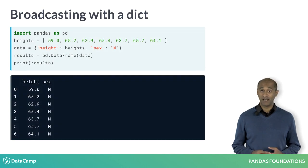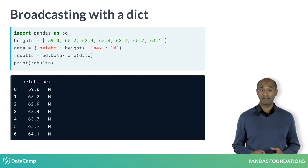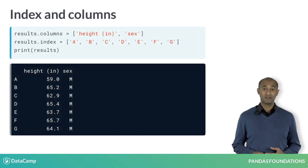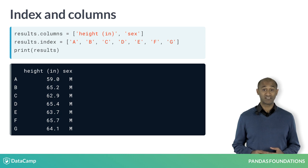Broadcasting is not restricted to numbers. Here, we create a dictionary data with column labels height and sex as keys, and a list and a single character string m as values. When the dict data is used to create the data frame results, the value m is broadcast to the entire column. Remember, we can change the column and index labels using the columns and index attributes of a pandas data frame. We can assign lists of strings to the attributes columns and index, as long as they are of suitable length — that is, the number of columns and rows respectively.